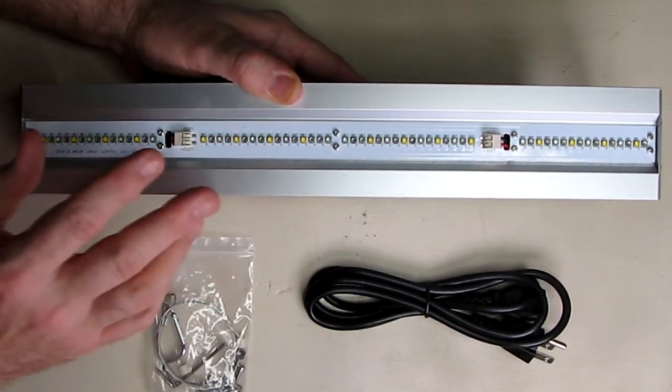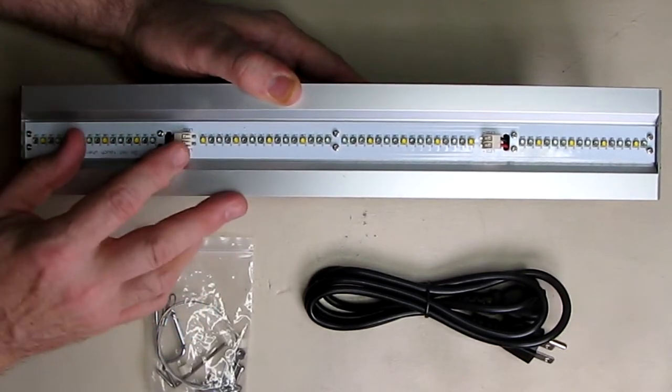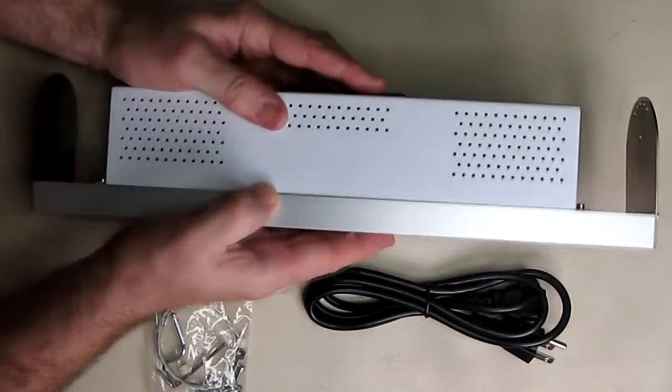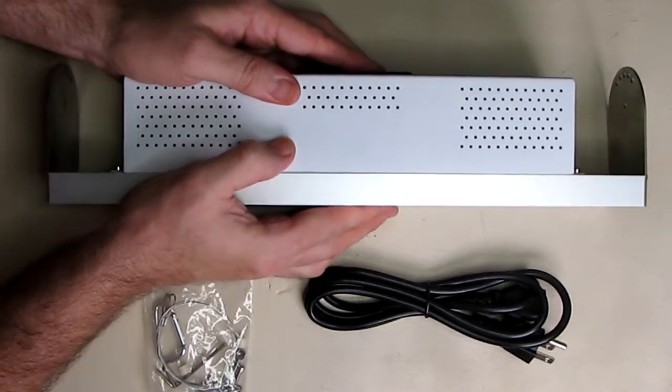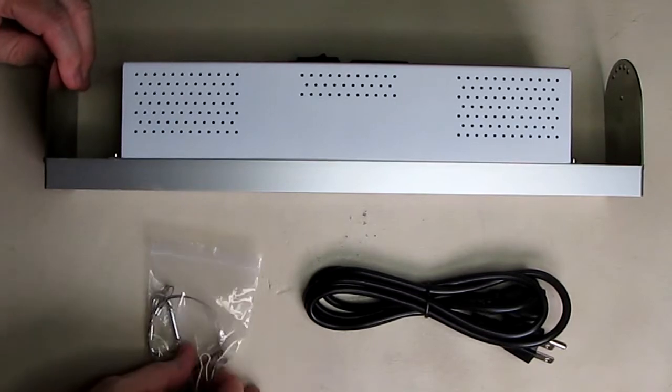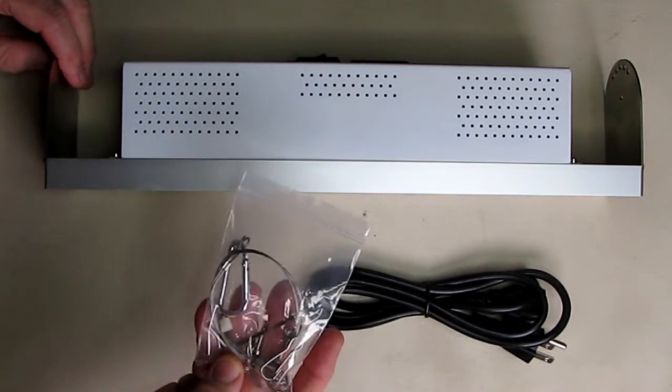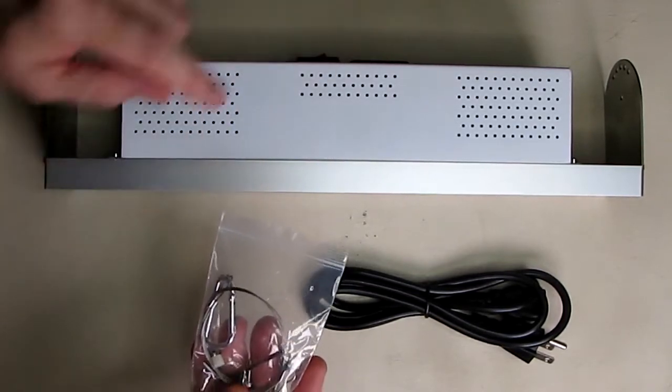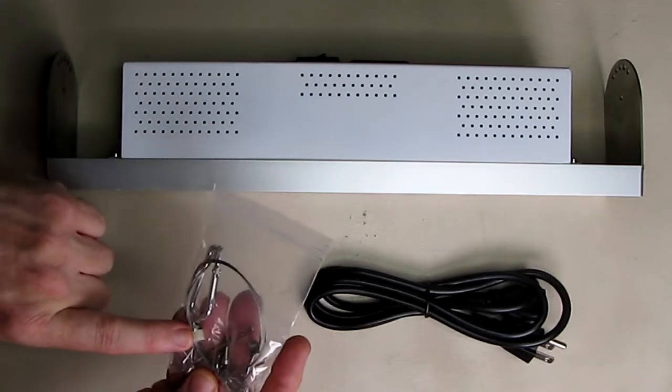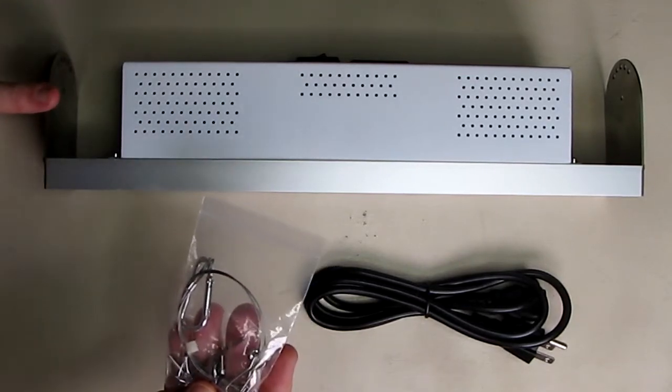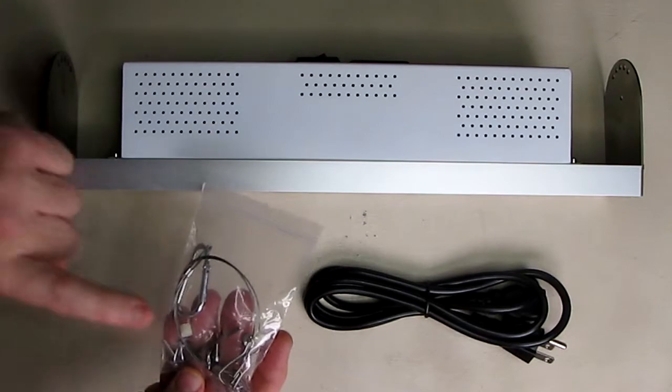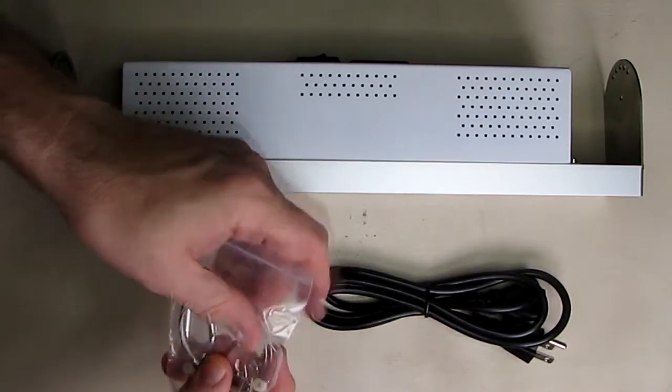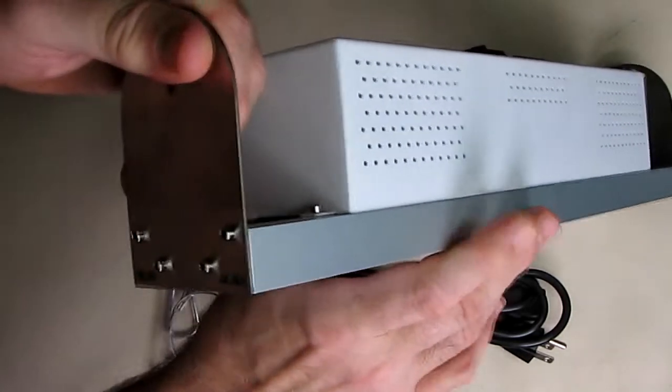This product only weighs 3.3 pounds and it's very slim profile as I showed. Included is mounting hardware to mount the light and also some hardware if you want to put more of these in series, which is nice, and a little hex tool to tighten these hex nuts.